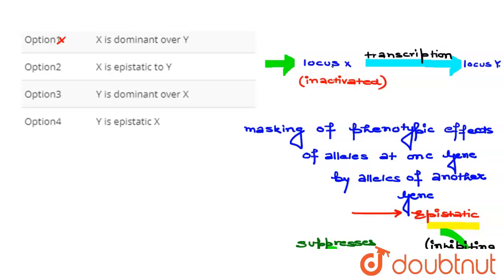because these genes suppress the effect of the other gene. So X is acting as an epistatic gene here because when it is activated, ultimately it inhibits transcription of locus Y. But when it becomes inactivated, then transcription of locus Y occurs.